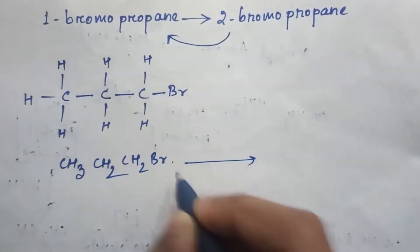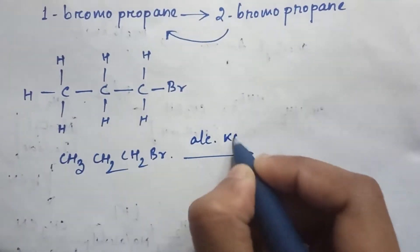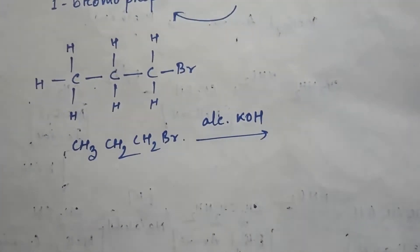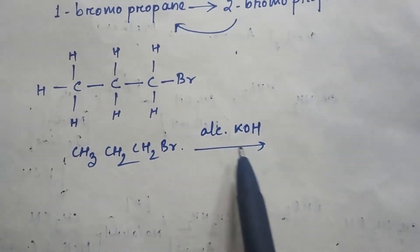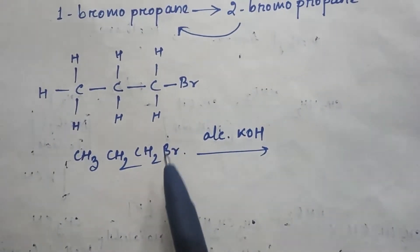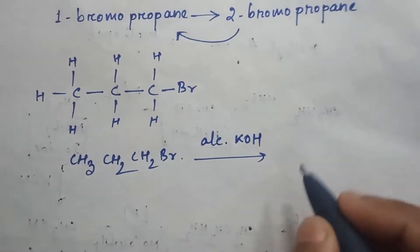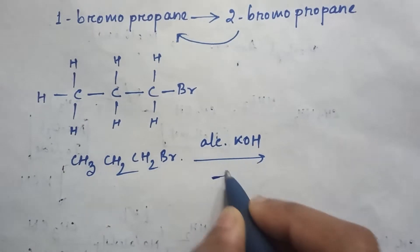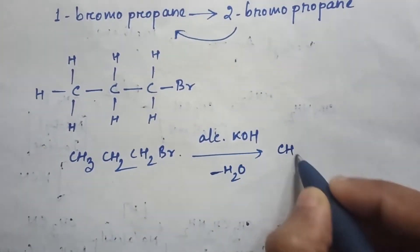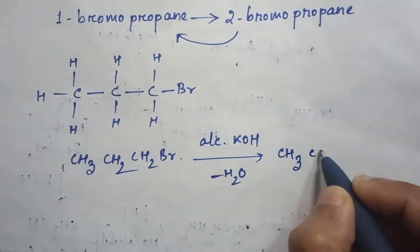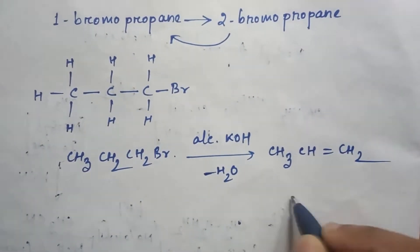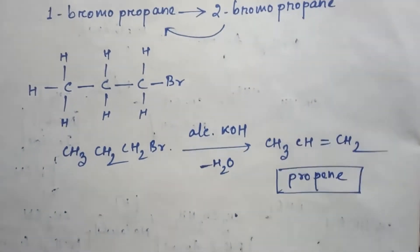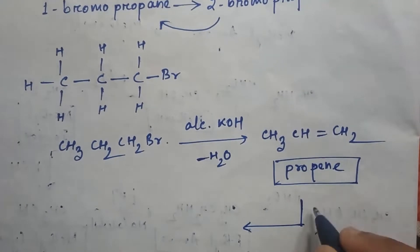If we use alcoholic KOH on 1-bromopropane — which is a dehydrohalogenating agent — the alcoholic KOH will remove the bromine group along with a hydrogen atom. A water molecule is eliminated, and the product will be CH3-CH=CH2, which is propene.